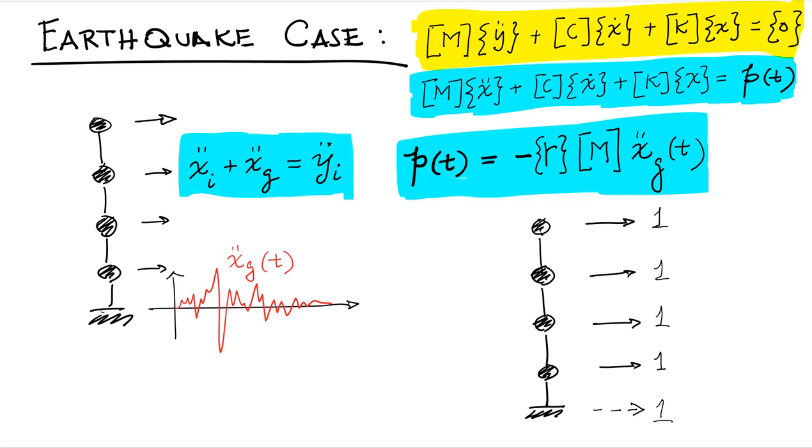So if you have a vertical structure like the one I'm showing here, that influence vector is simply one, one, one, one, one. So in this case, R would simply be one, one, one, one, one. Because when we move the ground one unit, all the masses move one unit exactly.